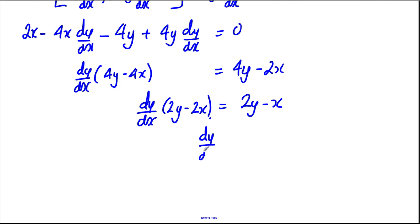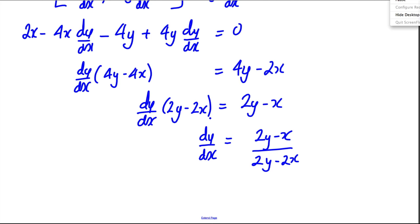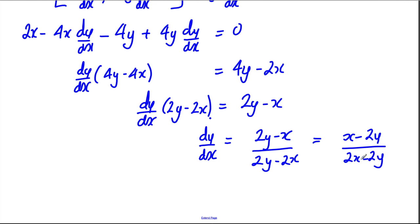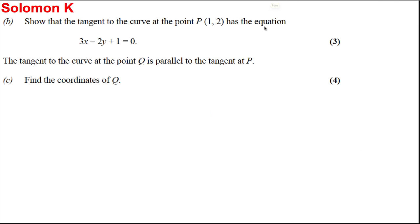Dividing both sides by 2, dy/dx times (2y minus 2x) equals 2y minus x. So dy/dx equals (2y minus x) all over (2y minus 2x) and we're done for the first part. Depending on how you rearranged, you may also have got (x minus 2y) over (2x minus 2y), which is the exact same thing.